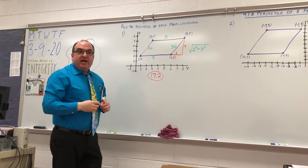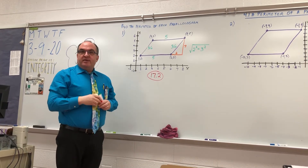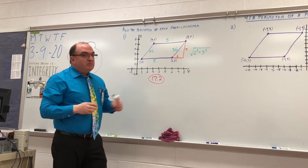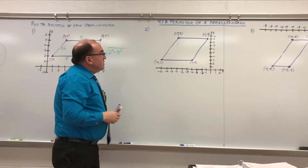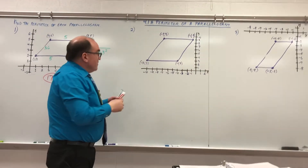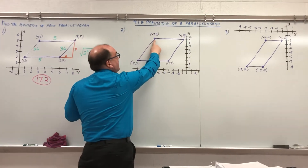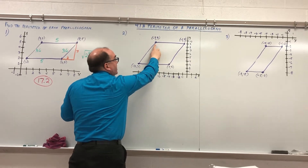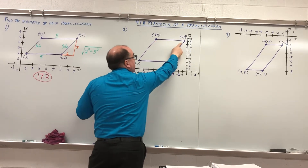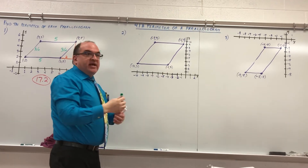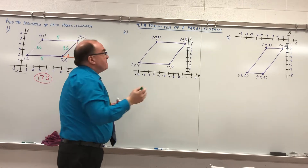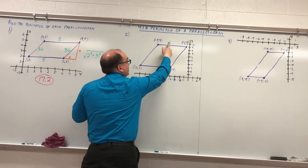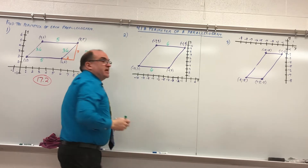Everyone okay with how we did that? Try the next one. Here is (−7, 9) and here is (−1, 9). From negative 7 to negative 1, what's that length? 6. And if that's 6, that's 6.